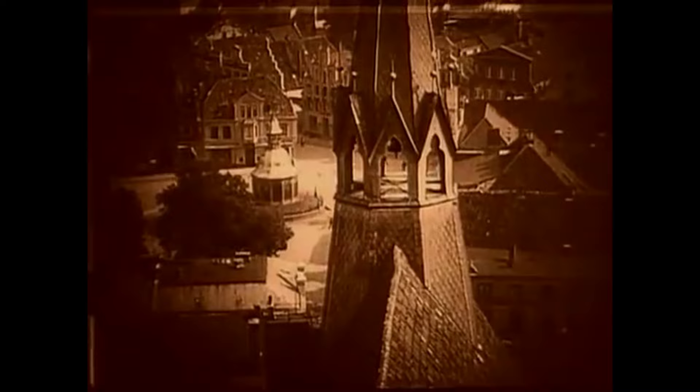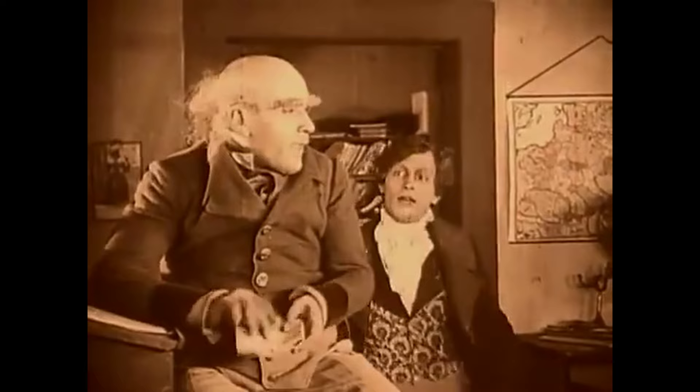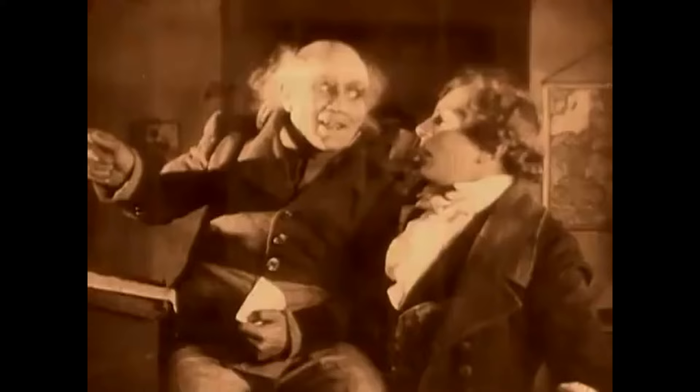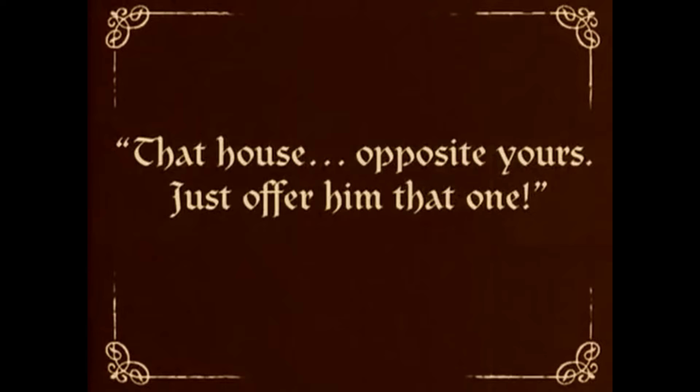It's 1838. In the fictional German town of Wisborg, Thomas Hutter is sent to Transylvania by his employer, the estate agent Herr Nock. He is to visit a new client named Count Orlach. Herr Nock has recommended that Orlach purchase a large estate across the street from Hutter's home.